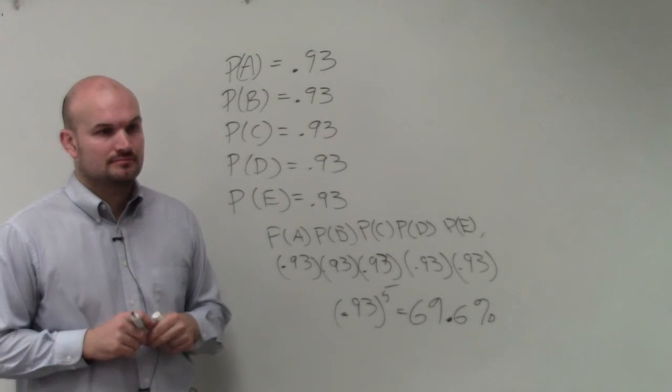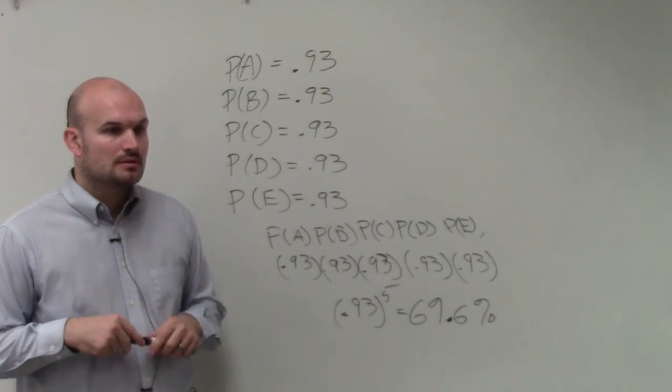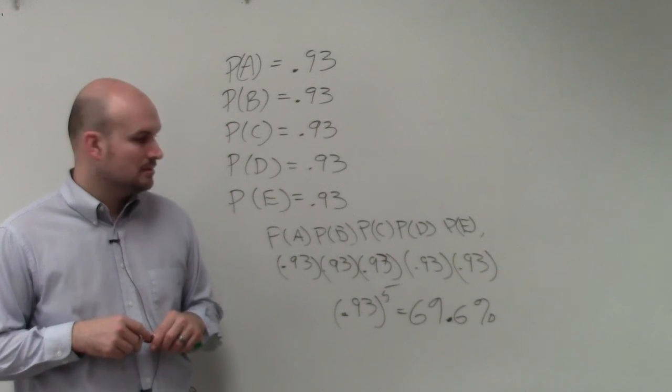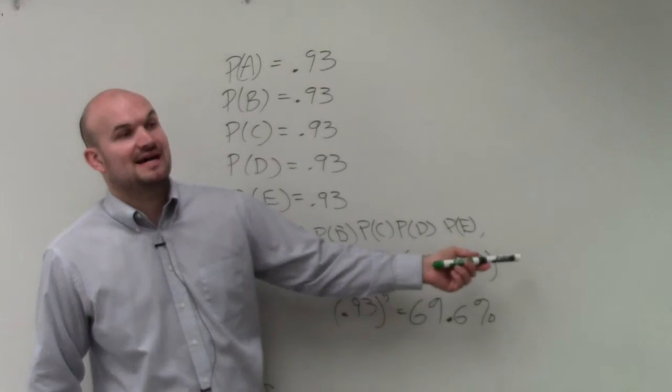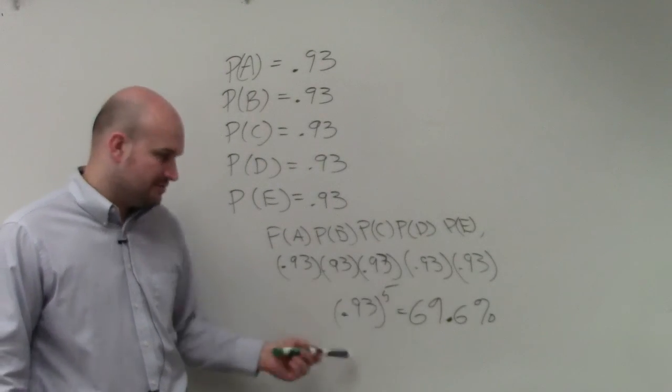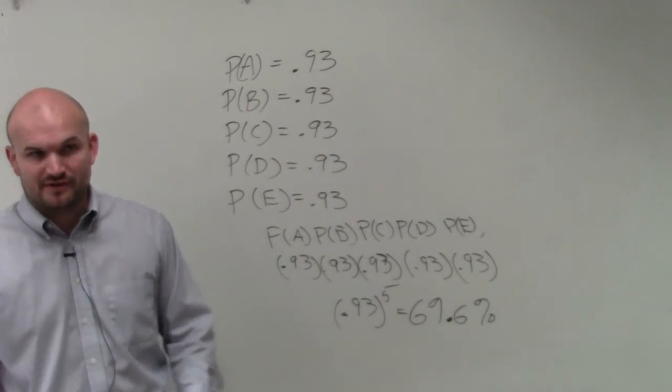Yes? Could you have 0.93 to the fifth power? Right, that's what the student did. Yeah, I said instead of multiplying it by five times, which I wrote out, we obviously, hopefully, we know that we can simplify multiplying a number by itself five times and just raising it to the fifth power.